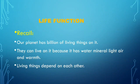Let us recall some points. Our planet has billions of living things on it. They can live on it because it has water, minerals, light, air, and warmth. Living things depend on each other — they are not independent. They need everything else; this is a whole chain.